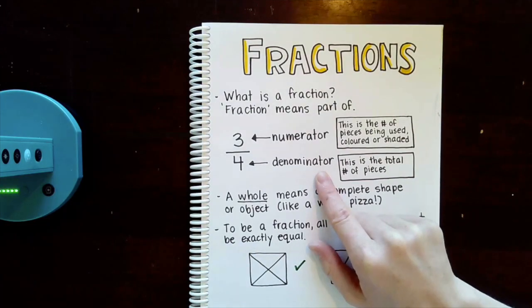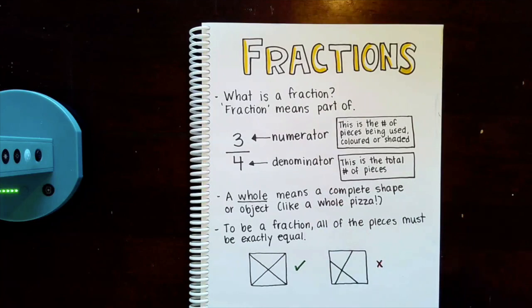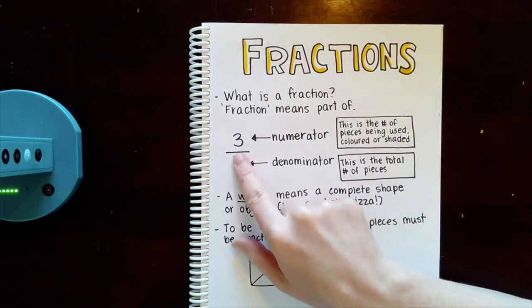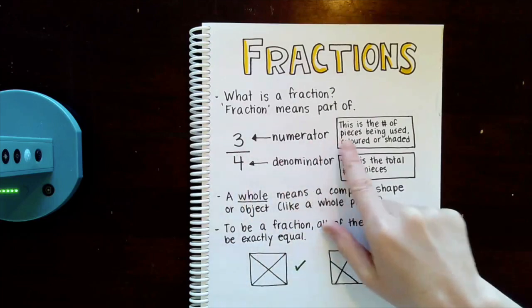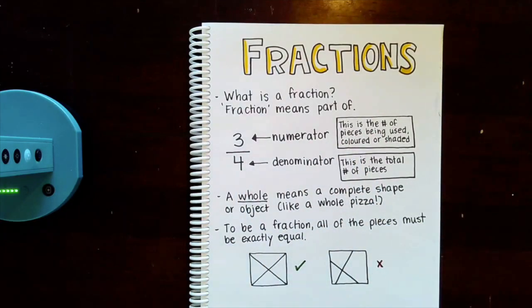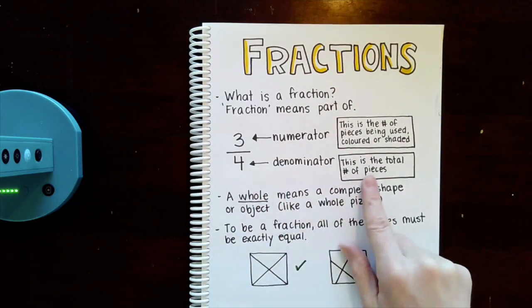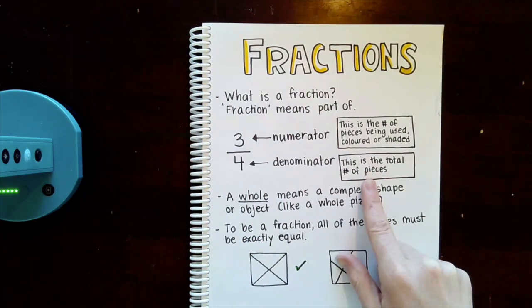I always think denominator sounds like a wrestler. The denominator! That's just me. Okay so the numerator is the number on top and it's the number of pieces being used, colored, or shaded, and I'll show you what that means in a minute. The denominator is the total number of pieces and it's always found on the bottom.